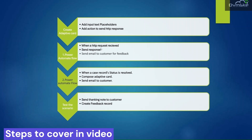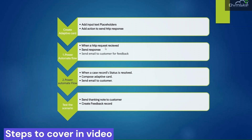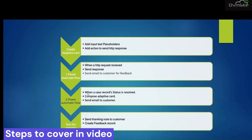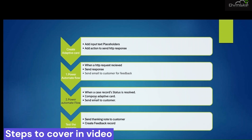The trigger for the first flow would be 'When an HTTP request is received.' This will receive the response from the customer whenever they send any response. From that response we will create a feedback record, and we will send back a reply to the customer from this Power Automate flow. There will also be a second Power Automate flow whose trigger will be whenever a case record status is resolved.